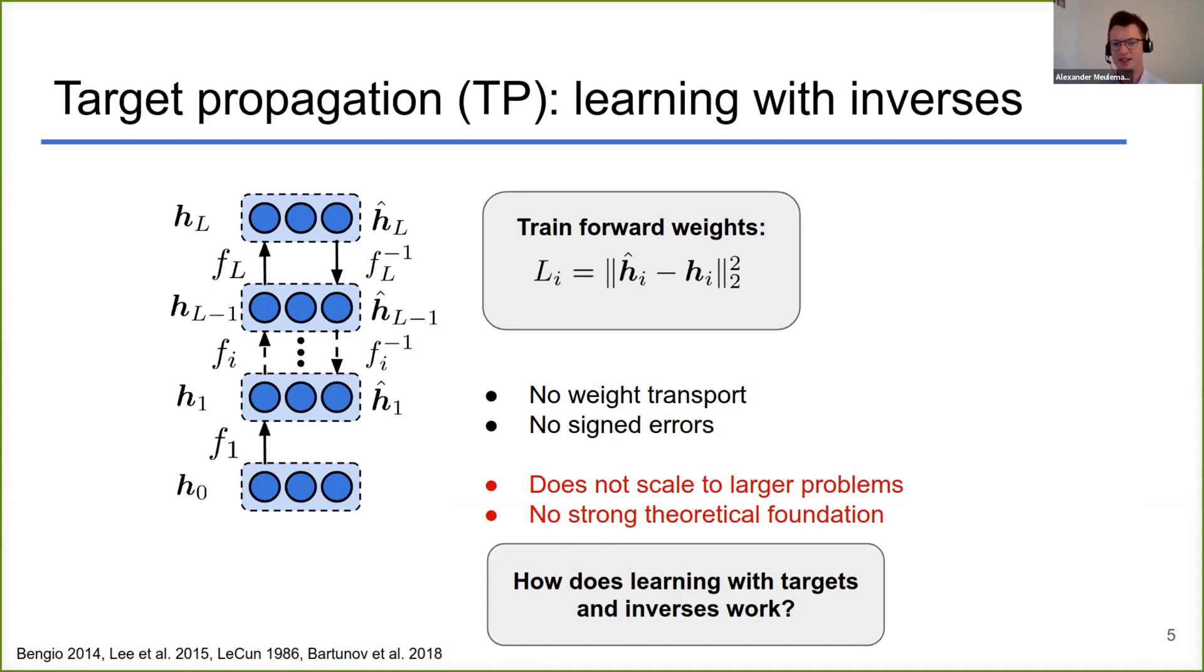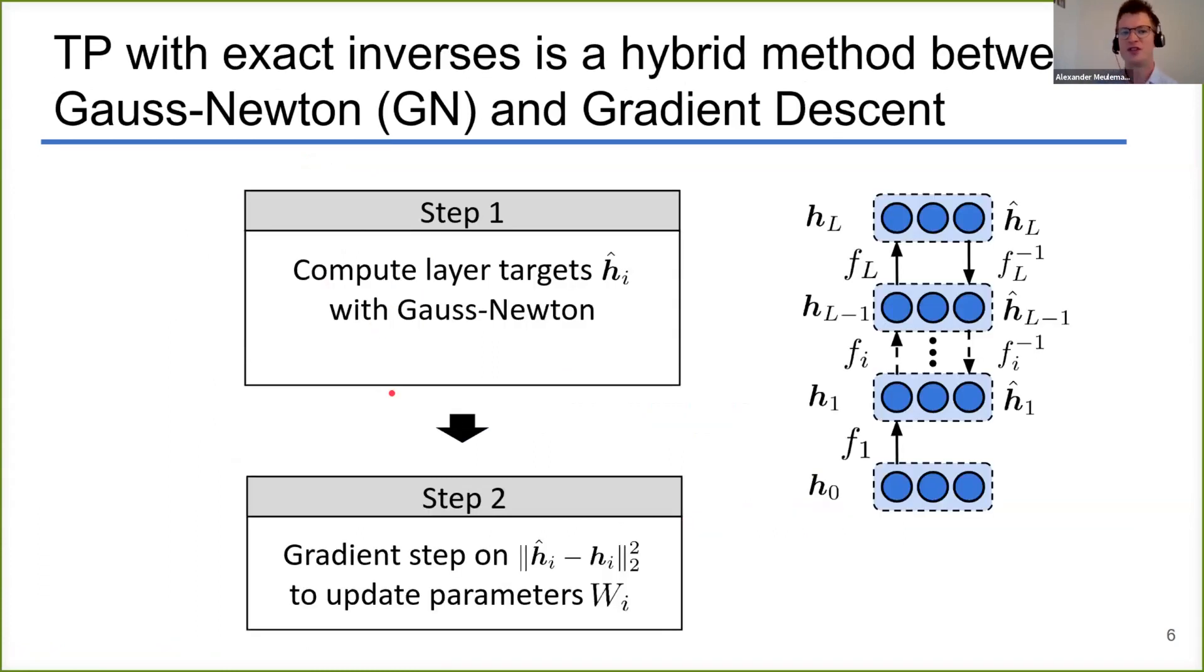So this gap is really the motivation of our work. We want to provide a new theoretical understanding in how a network can be trained by using targets and inverse functions of your feedforward pathway. As a first main result of our paper, we showed that target propagation with exact inverses—the exact inverse of the feedforward path—can be interpreted as a hybrid optimization method.